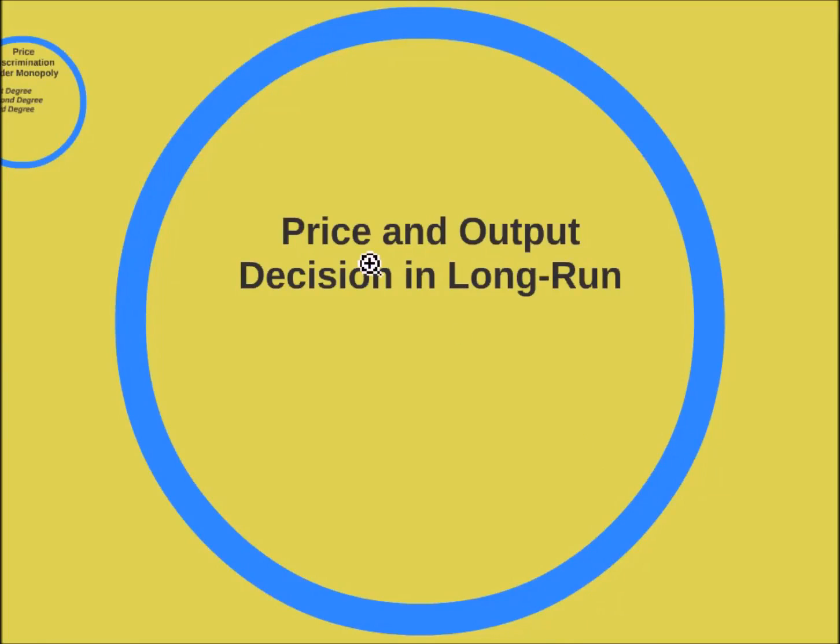Hello friends and welcome back to edupediaworld.com. In the last session we discussed how price and output decisions are taken in the short run under monopoly. Now in this session we will be continuing with how price and output decisions are taken in the long run under monopoly.